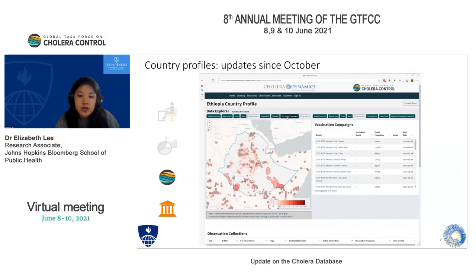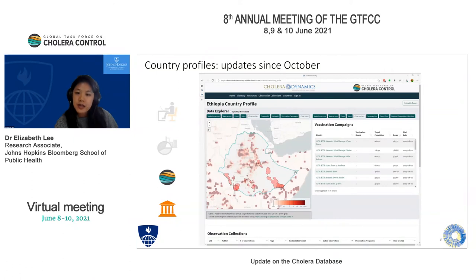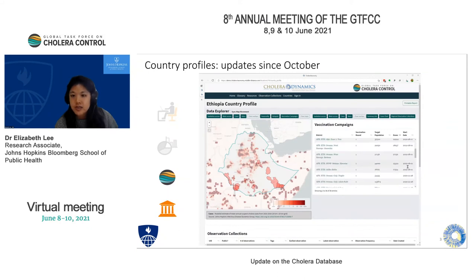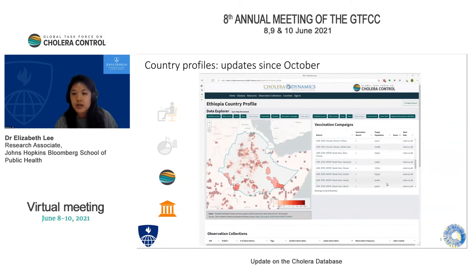We also gained access to vaccination campaign data from the GTFCC secretariat, displayed on the left, where all locations that had vaccination campaigns are shown on the map with an associated table on the right. For example, Chiro Town had a vaccination campaign with 98,000 doses administered, with vaccination coverage data still under collection.